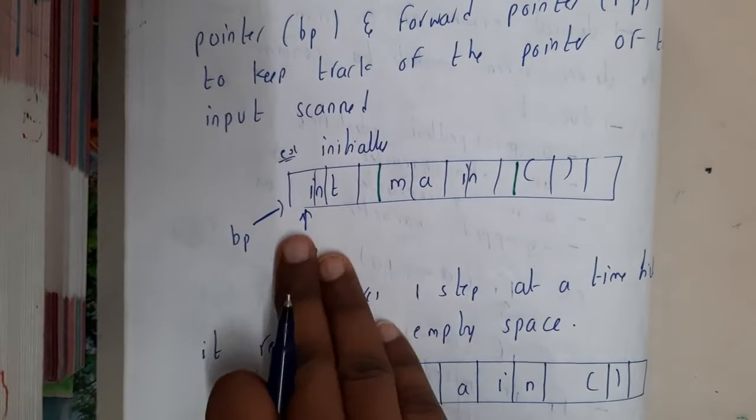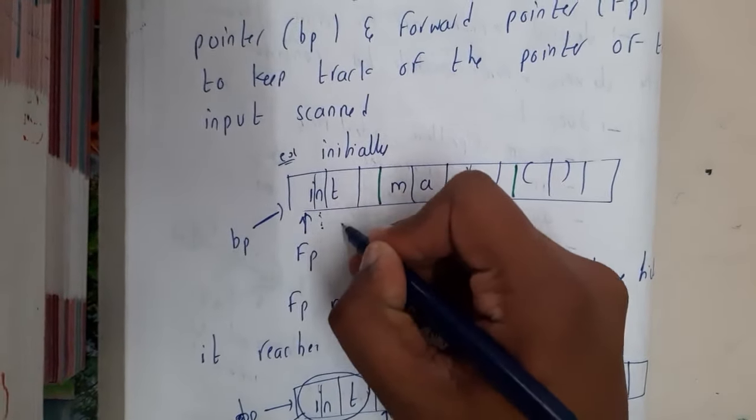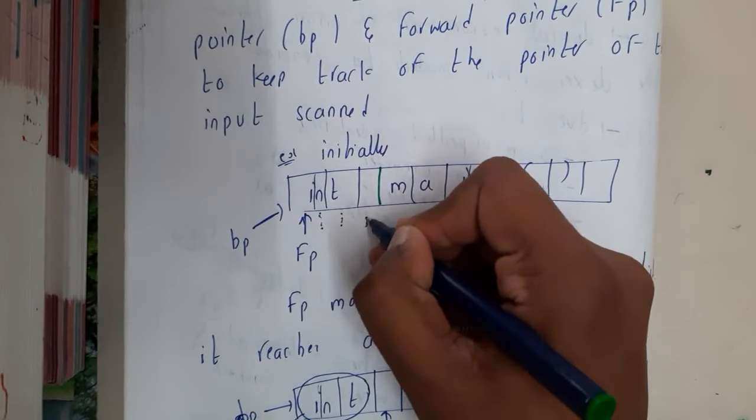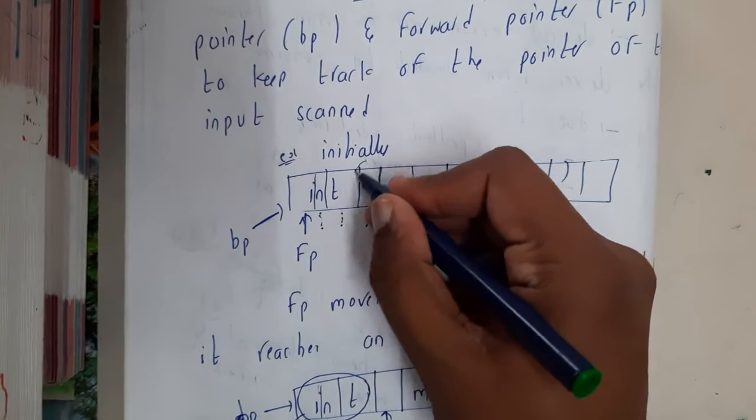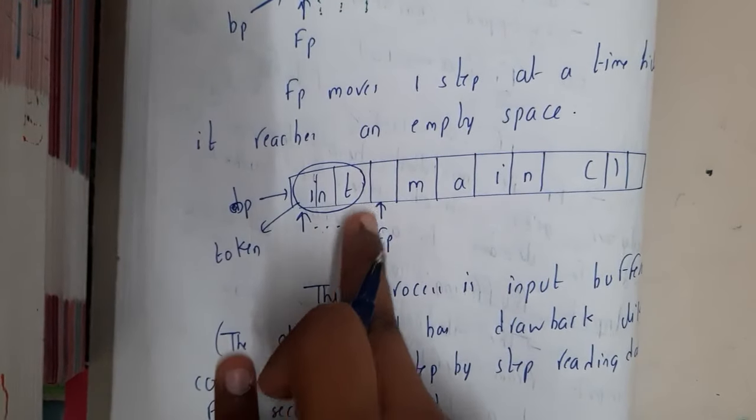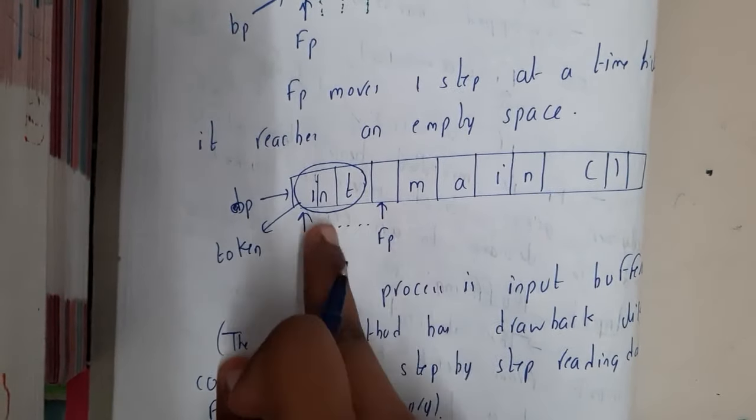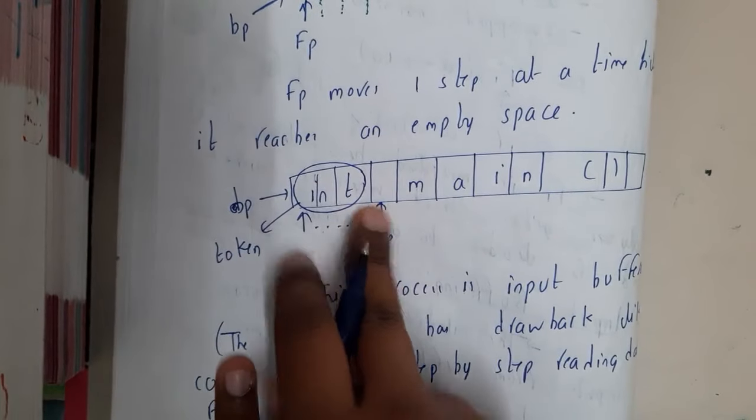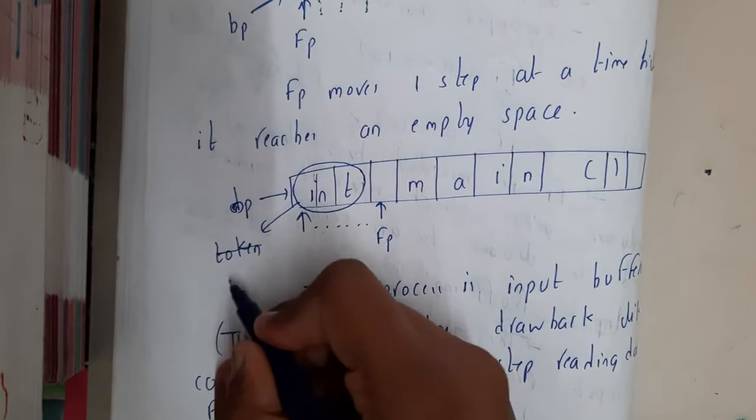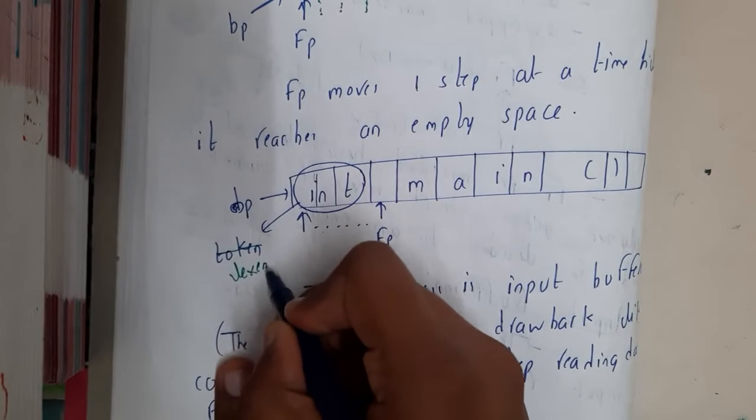Once it reaches the empty space, it considers everything till the empty space as a single lexeme. In simpler words, just call it lexeme. Don't call it token because token will be a data type.